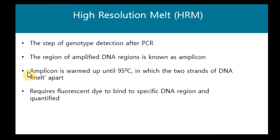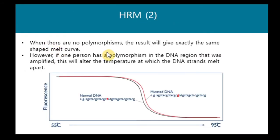High Resolution Melt is a method for genotype detection after PCR. The region of amplified DNA is called an amplicon, and there is a specific temperature at which the DNA strands will melt apart. When there is no polymorphism between two DNA samples, the result gives exactly the same shaped melting curve. However, if one person has a polymorphism in the amplified DNA region, this alters the temperature at which the DNA strands melt, producing a different melting curve compared to those without the polymorphism.